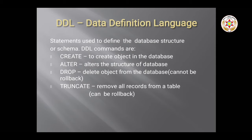In DDL, the commands CREATE, ALTER, DROP, and TRUNCATE are included. CREATE is used to create objects in the database — such as stored procedures, tables, and indexes. ALTER is used to modify the structure of the database; if you have created a table, you use ALTER to change its structure. DROP is used to delete an object from the database.